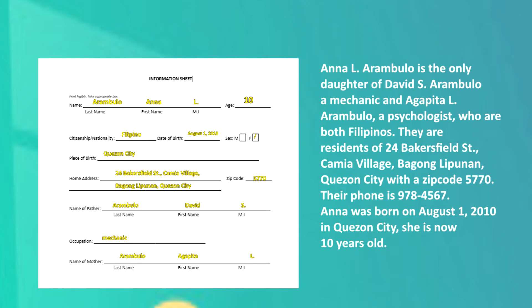For the signature and printed name, Ana needs to put her full name followed by her signature on top of it. And then write the date when Ana filled out the form. And this is how an accomplished information sheet looks like — it is neat, filled out correctly, and accurately.